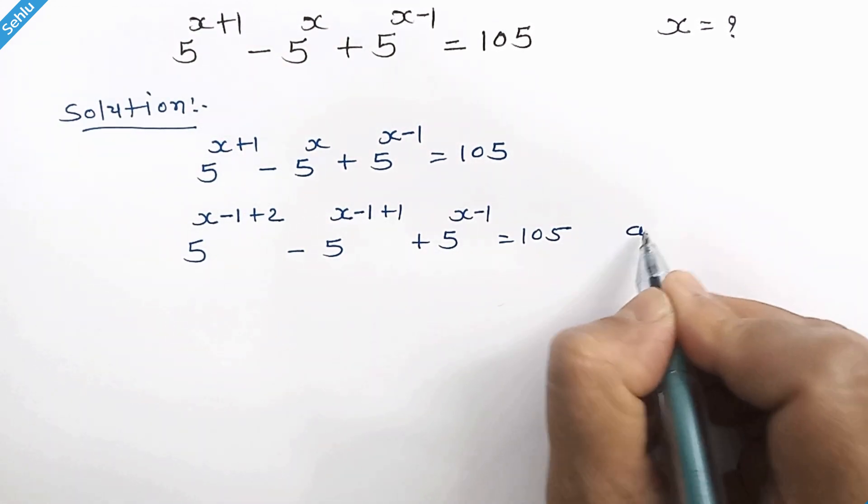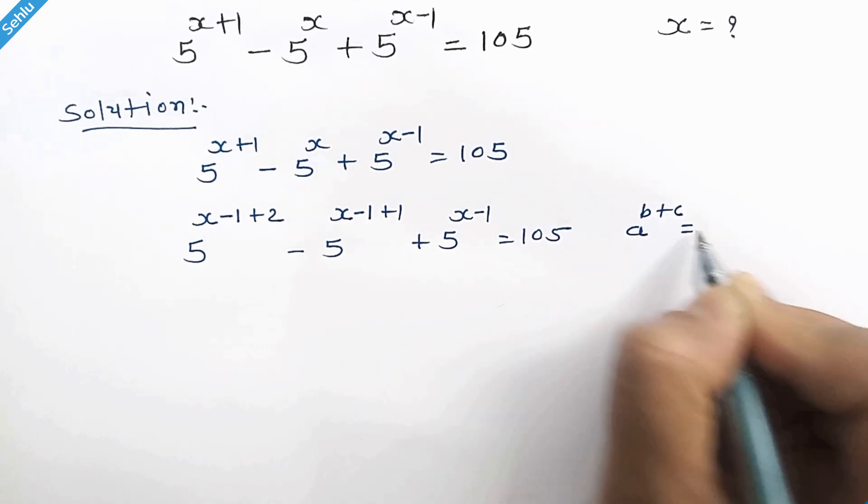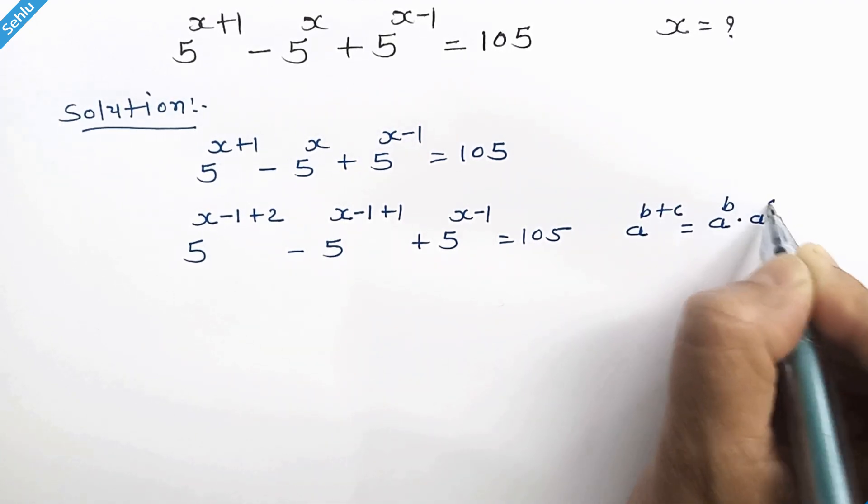Now if we have a raised to b plus c, then it can be written as a raised to b times a raised to c.